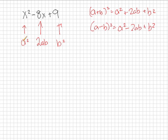If this is a perfect square, this term right here is going to be a squared, so it looks like our a will be equal to x. And this term over here is going to be b squared, so it looks like our b in this case will be equal to 3.